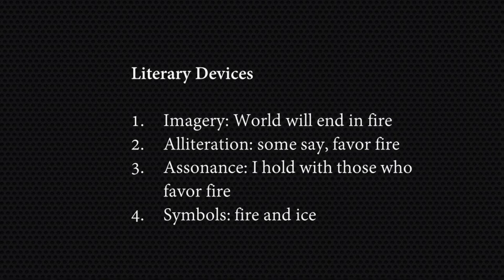Now let's look at the poetic devices in the poem. Imagery: whenever you read a line, an image is formed in your mind — for example, 'the world will end in fire' is an imagery. Then we have alliteration: 'some say' and 'favor fire.' Then assonance — assonance is the repetition of a vowel sound. In 'I hold with those who favor fire,' the O sound is repeated. And we have symbols: fire and ice, which represent desire and hatred.